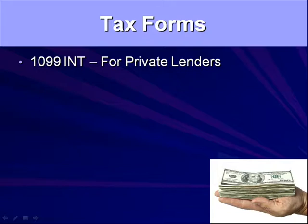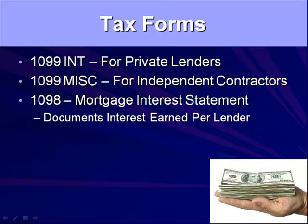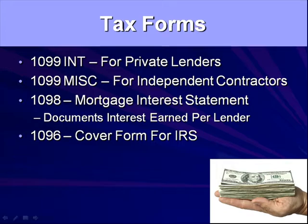Some other forms to know: 1099-MISC is for independent contractors — if you have contractors who aren't employees and earned a certain amount, you send them a 1099-MISC. 1098s: if you have people on land contracts or contract for deed making monthly payments to you, you send them a 1098. And you also need to send a 1096 form to the IRS to tie everything together. A key reminder: interest paid to private lenders is an expense for you and your company — you get to deduct it for tax purposes, which is actually good news.